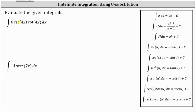We're going to let u equal the inner function of 4x. If u is equal to 4x, the integrand function is 6 cosecant u times cotangent u, but we still have dx. The next step in performing u substitution is to determine differential u, where differential u is equal to the derivative of 4x times dx, giving us differential u equals 4 times dx.